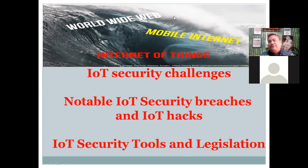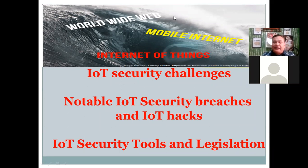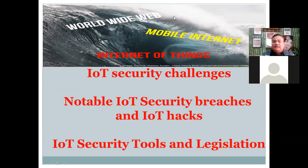In 2010, researchers revealed that the Stuxnet virus was used to physically damage Iranian infrastructure, with attacks starting in 2006 but the primary attack occurring in 2009. Often considered one of the earliest examples of an IoT attack, Stuxnet targets supervisory control and data acquisition systems in industrial control systems, using malware to infect instructions sent by programmable logic controllers. Attacks on industrial networks have continued with malware such as Crash Override or Industroyer, Triton, and VPNFilter targeting vulnerable OT and industrial IoT systems.